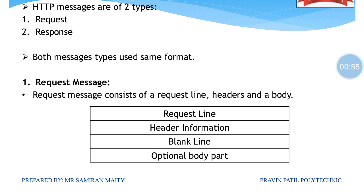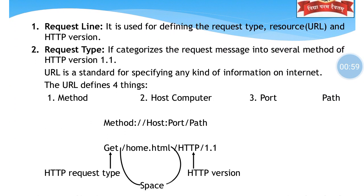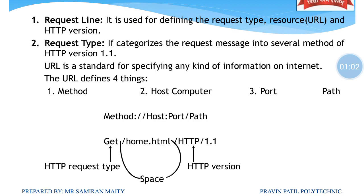If asked about HTTP messages, you should draw this diagram. The request line is used for defining the request type, resource URL, and HTTP version. For example, GET is an HTTP request type, home.html is the URL, and the HTTP version is 1.1. We have various request types such as GET, POST, and others.